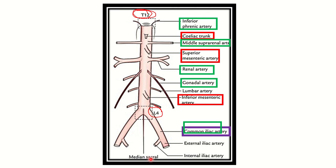The posterior branches are the median sacral artery and the lumbar arteries. The lumbar arteries come in four pairs, so there are two types of posterior branches. In summary: two terminal branches, two types of posterior branches, four types of lateral branches, and three anterior branches.